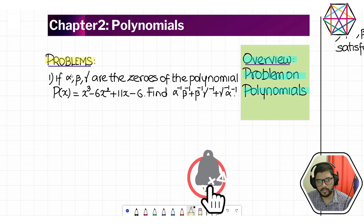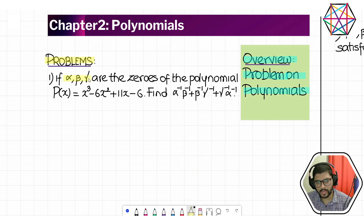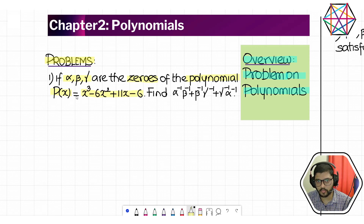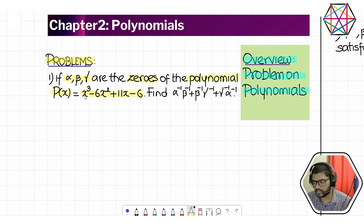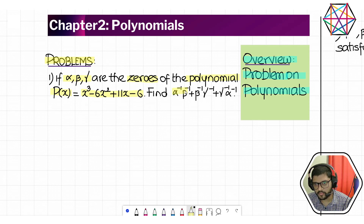Problem number one: if alpha, beta, gamma are the zeros of the polynomial P equal to x³ minus 6x² plus 11x minus 6. Alpha, beta, gamma are the zeros of a cubic polynomial, and a cubic polynomial according to the Fundamental Theorem of Algebra is expected to have three zeros — so it's perfectly matching. Now we are asked to find α⁻¹β⁻¹ + β⁻¹γ⁻¹ + γ⁻¹α⁻¹.